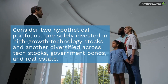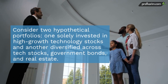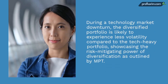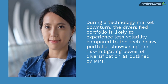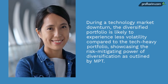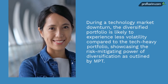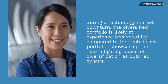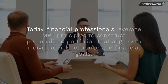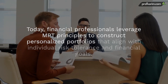Practical application — MPT in action. Consider two hypothetical portfolios: one solely invested in high-growth technology stocks, and another diversified across tech stocks, government bonds, and real estate. During a technology market downturn, the diversified portfolio is likely to experience less volatility compared to the tech-heavy portfolio, showcasing the risk-mitigating power of diversification as outlined by MPT.